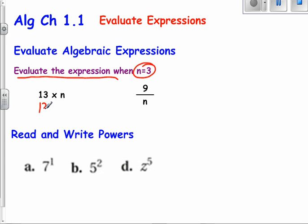So when n is 3, I have 13 times 3. And if you simplify that, you get 39. Another example, 9 over n, excuse me, would be the same thing as 9 over, substitute 3 in for the n, which gives me 3. Go ahead and simplify that, and your answer would be 3.